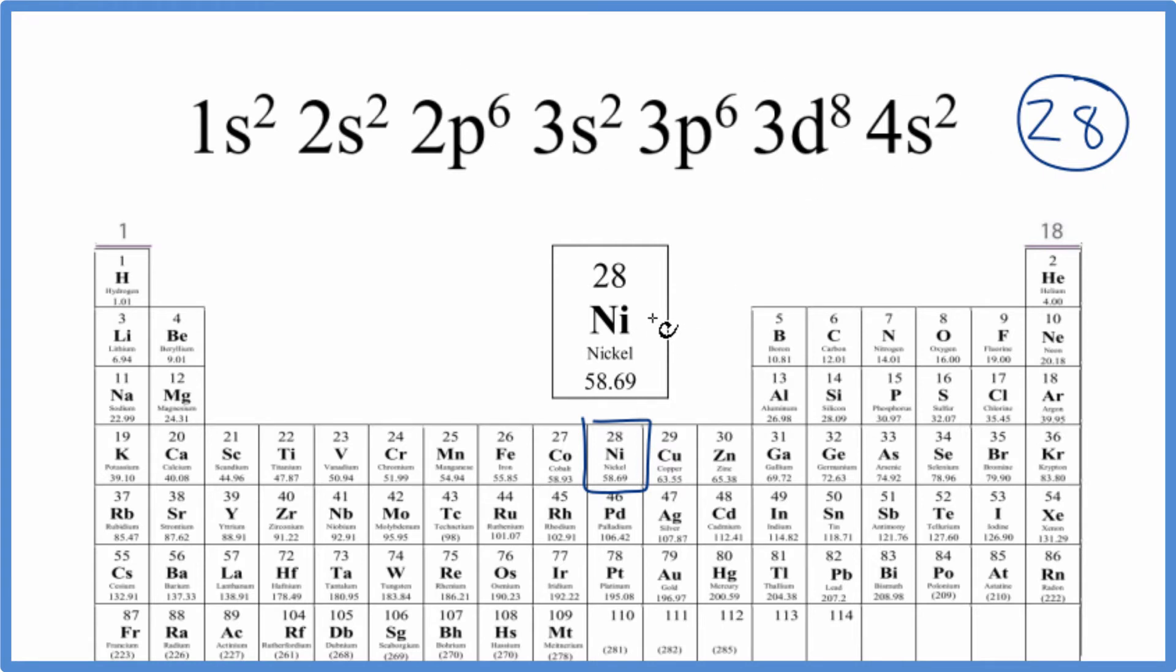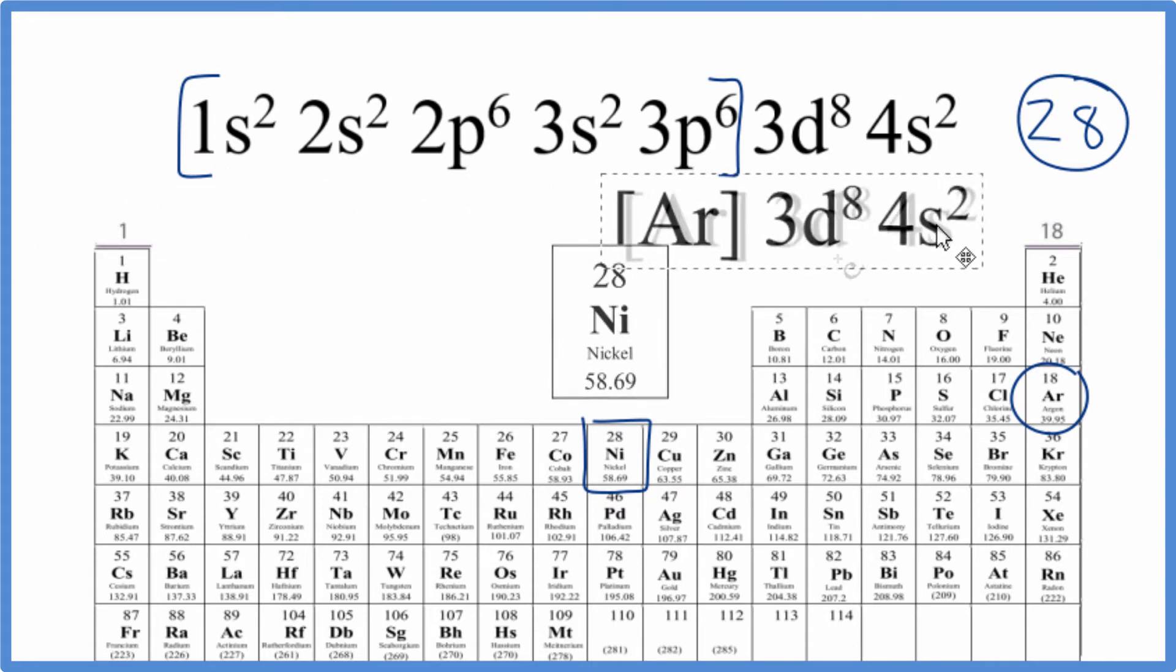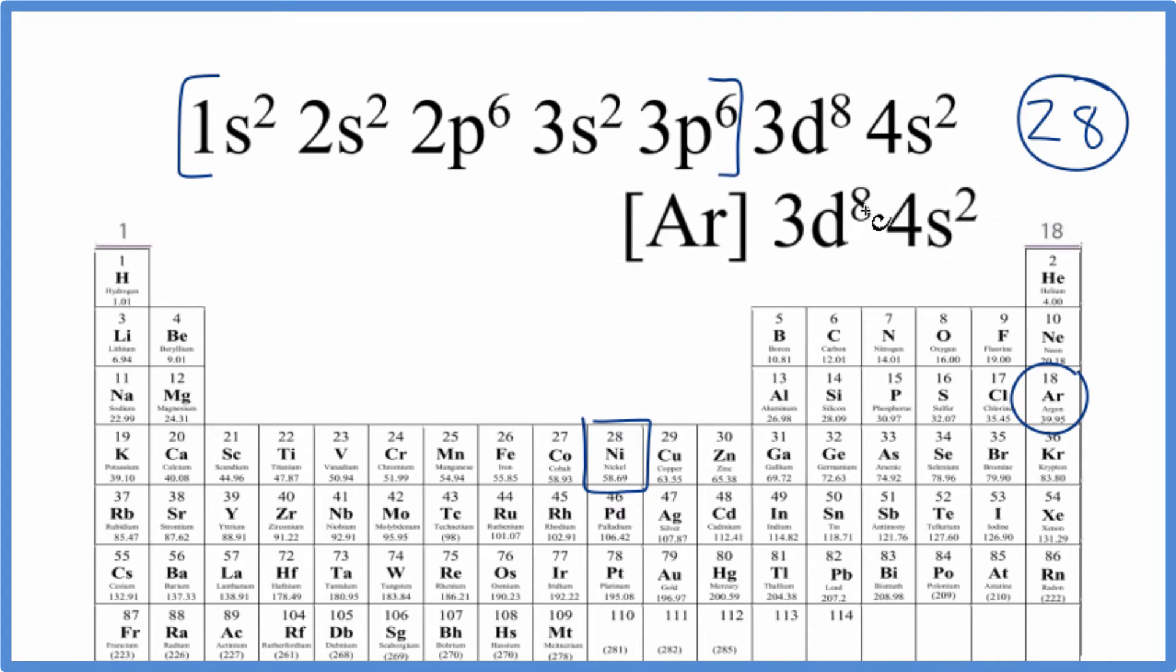So we find the noble gas before nickel on the periodic table. We have 28, and we go back, here's argon right here, 18. So we could put these first 18 electrons in brackets and just write Ar like this. And this would be the condensed notation.